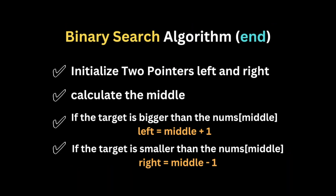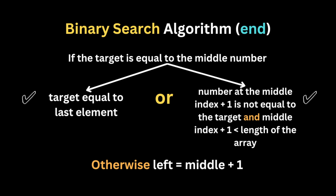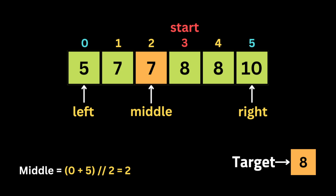That's not the final result yet — we still need to find the end of the target's appearance. We use binary search again for this. The process is the same, with one difference in the condition when the middle equals the target: we check if the middle index is at the end of the array, or if the number after the middle index is not equal to the target. If neither condition holds, we move the left pointer to middle plus one and continue searching.